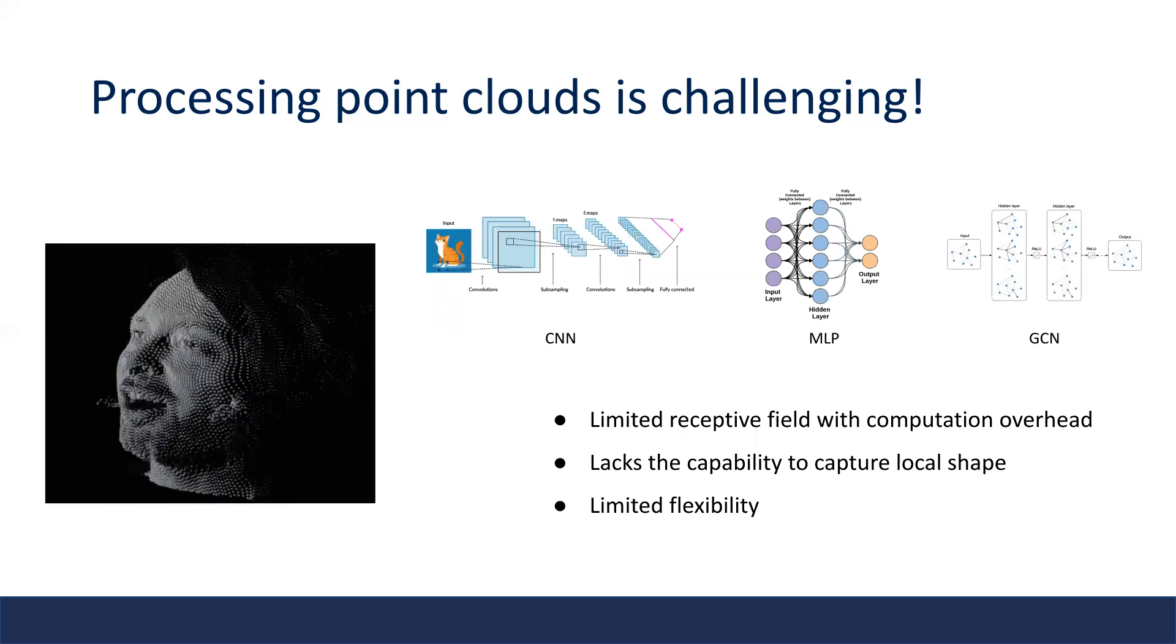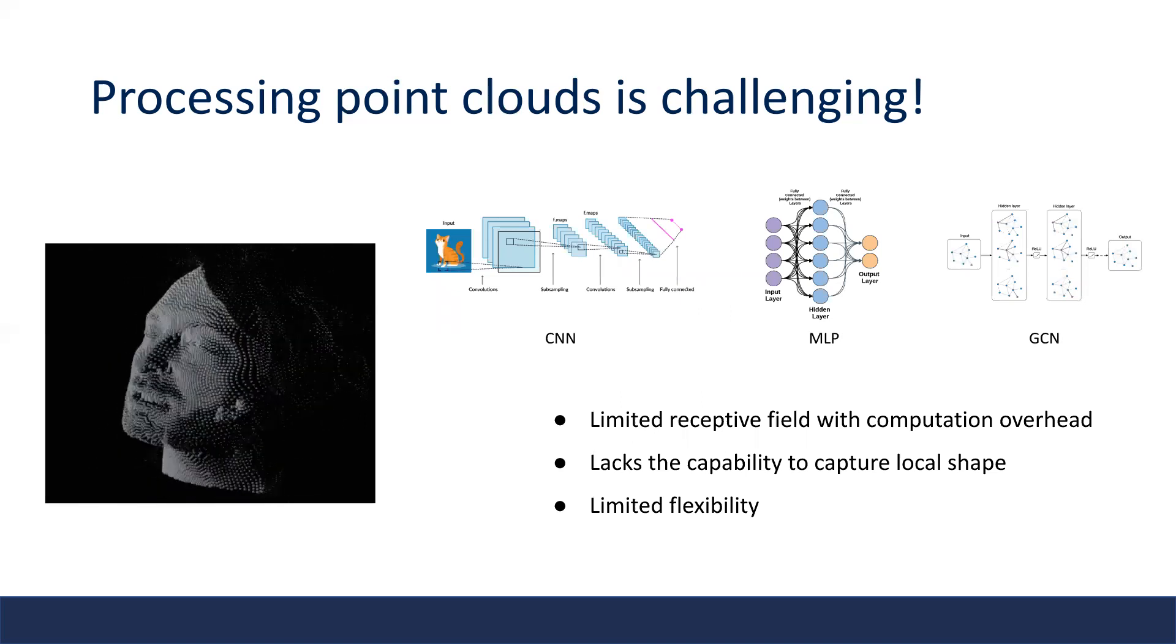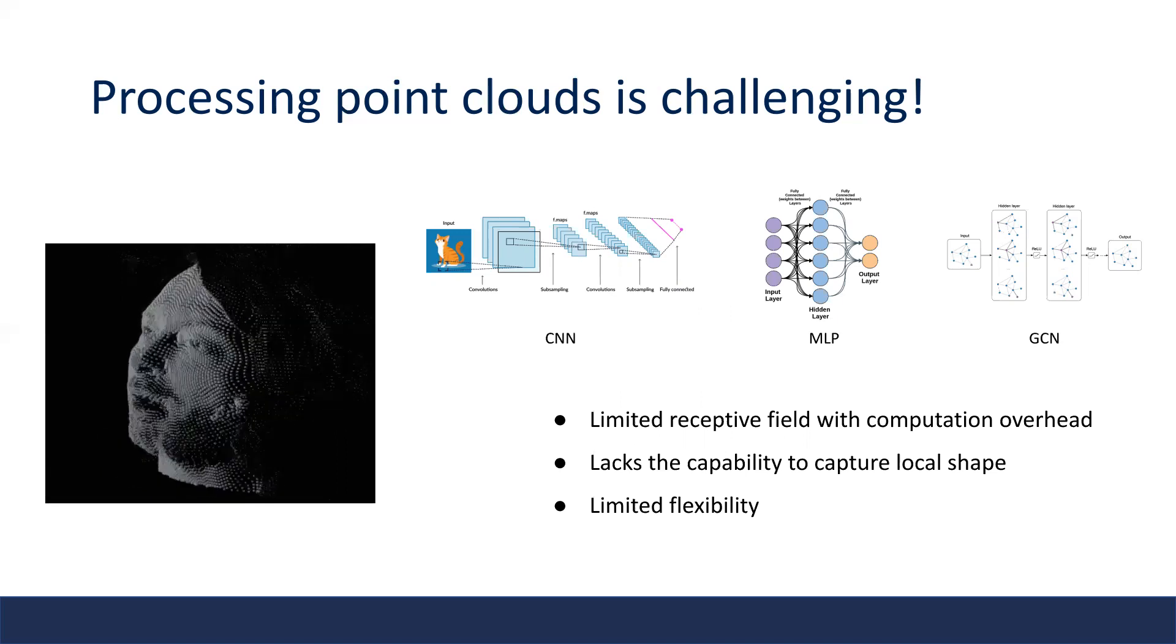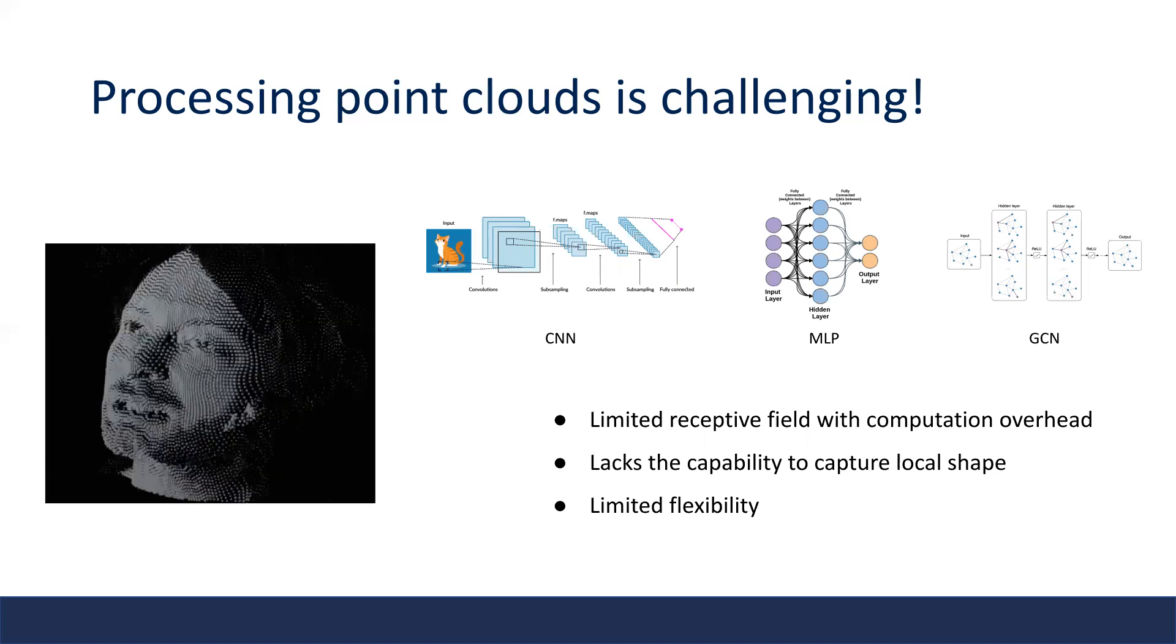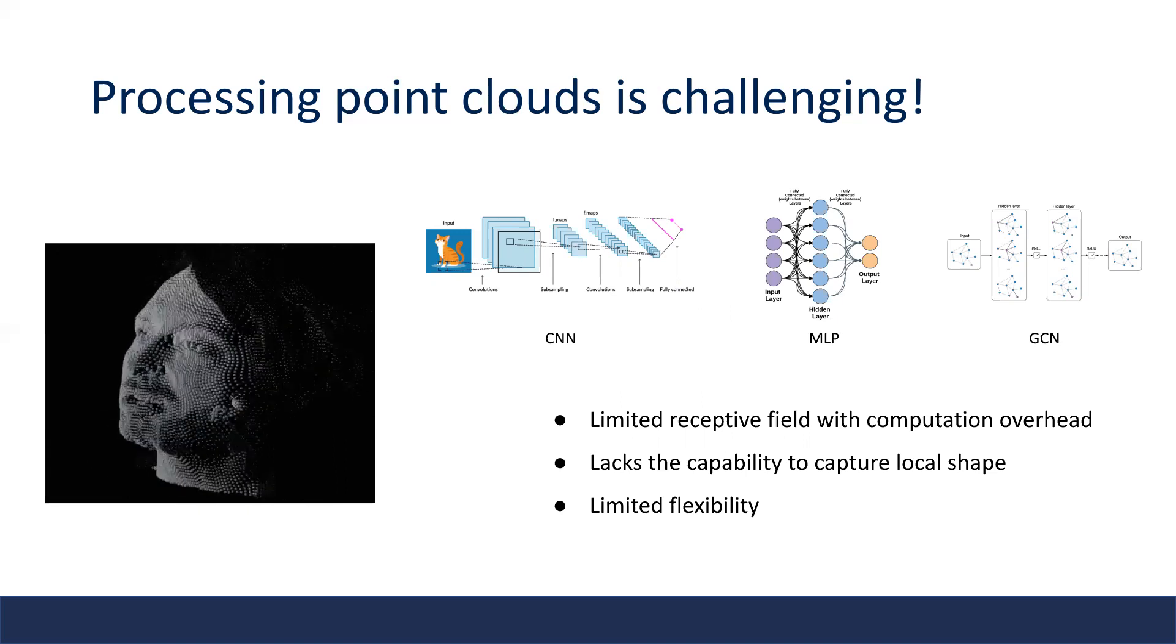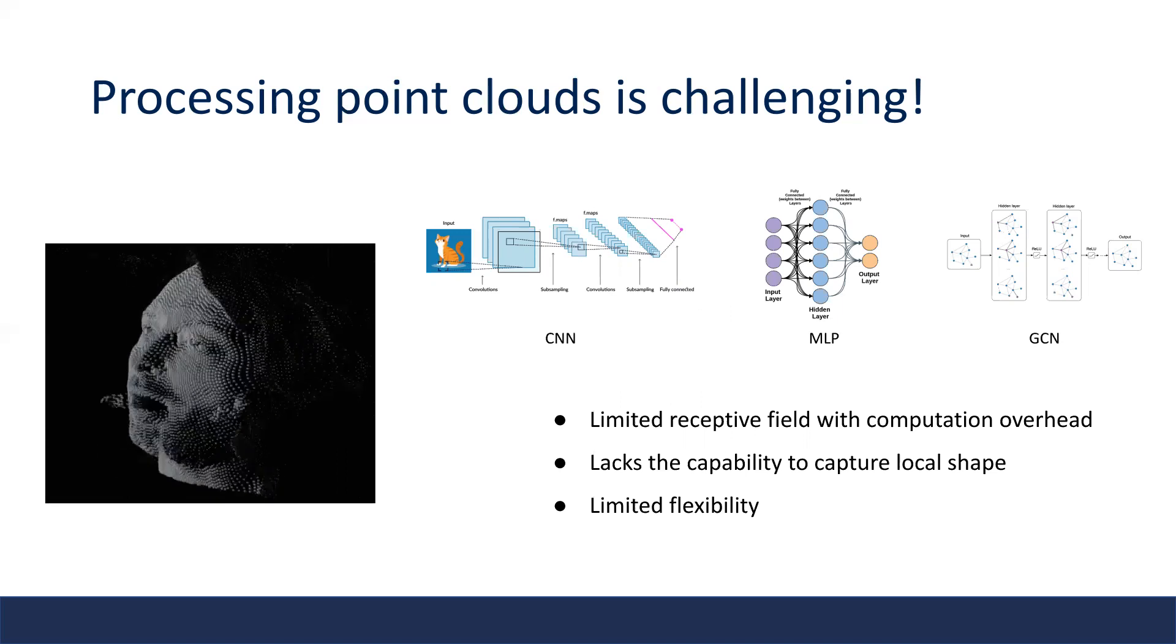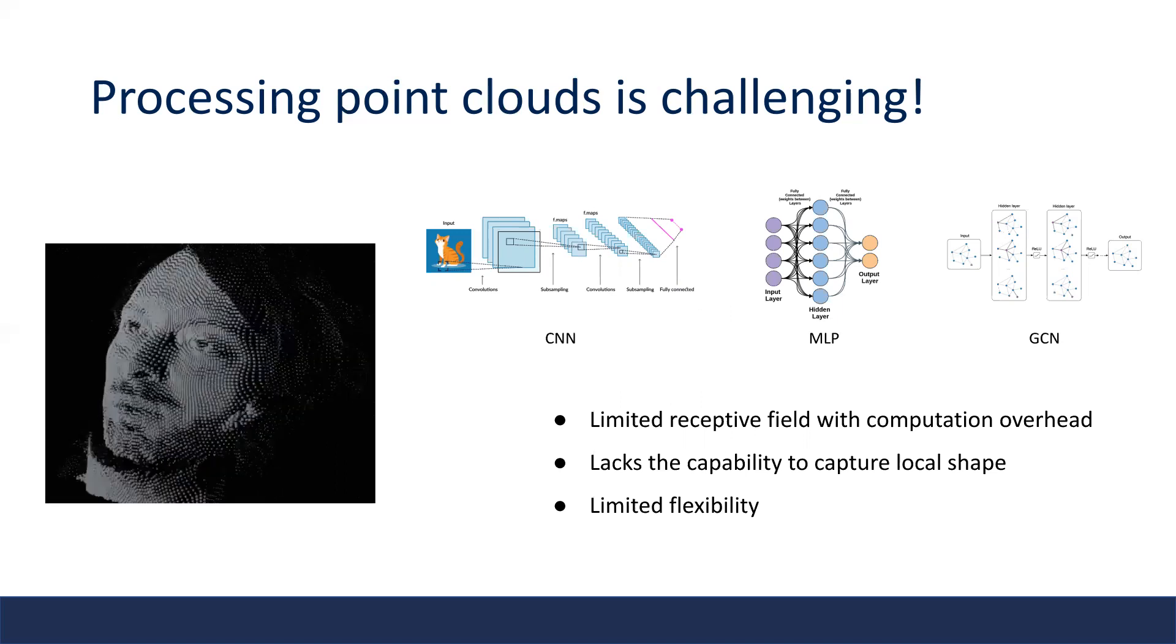Previous works have been using off-the-shelf neural networks to process such data, like convolutional neural networks, multi-layer perceptrons, and graph convolutional networks. However, directly applying these architectures to point cloud data brings many issues like expensive computation, loss of fine details, or limited flexibility.